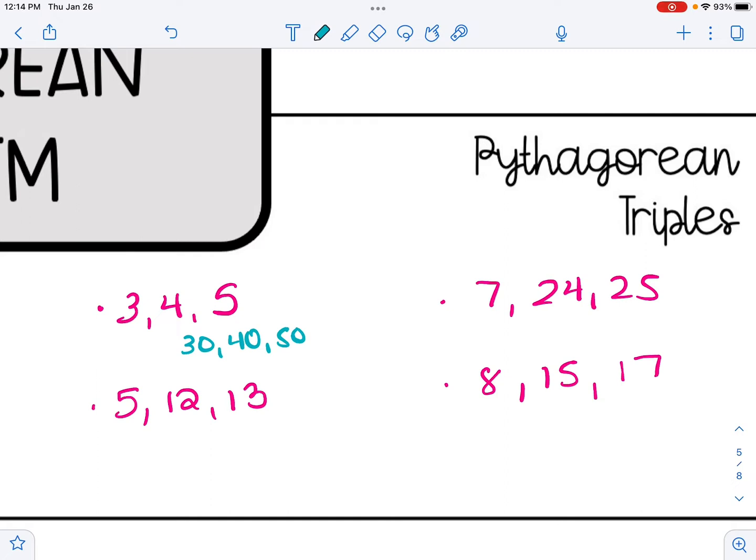Or like 5, 12, 13 might show up in a problem as 10, 24, 26, each side being doubled. And we could come up with any variation of this, but these triples represent the reduced values in simplest form. Let's take a look at some examples using the Pythagorean Theorem.